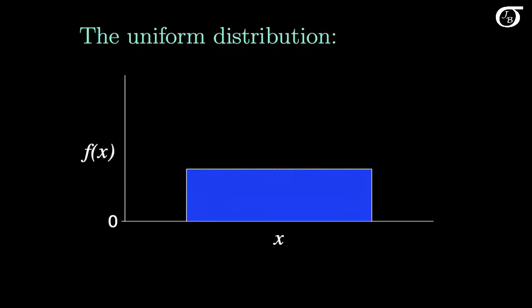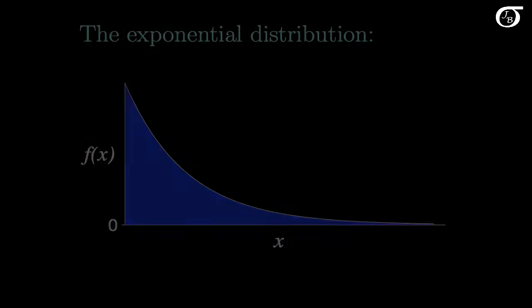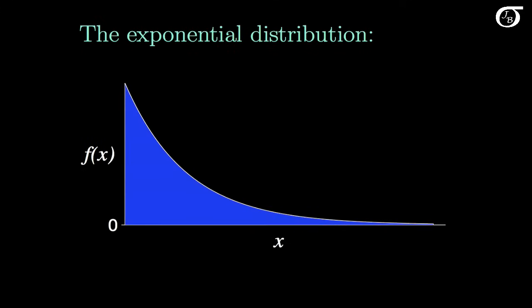This is the continuous uniform distribution for which f of x is constant over the range of possible values of x. The exponential distribution looks something like this. This is something we might see in exponential decay or a number of other spots. And there are many other continuous probability distributions that are very important to us in probability and statistics.